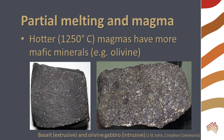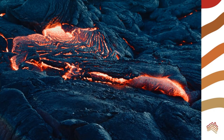Hotter magmas have more dark-colored mafic minerals in them, and they form a darker-colored rock. Their temperature may be 600 degrees hotter than felsic magma. The mafic magmas flow smoothly and do not trap much gas, so the eruptions are effusive, with lava oozing out rather than exploding.